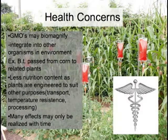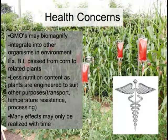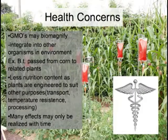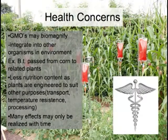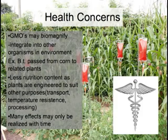There are many health concerns surrounding genetically modified organisms. GMOs may biomagnify — they integrate into other organisms in the environment. For example, the bacterium Bt passed from corn into other related plants. Also, there is less nutrition content as plants are engineered to suit other purposes such as transport, temperature resistance, and processing. Furthermore, many effects may only be realized with time.